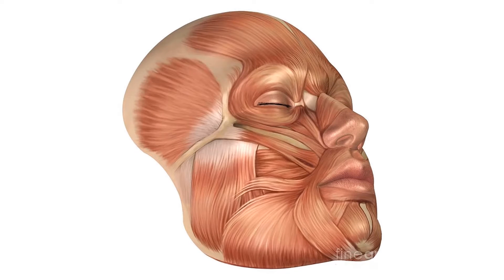As we can see in this slide, the face is full of muscles. Muscles are usually concentrated around the openings of the face, mainly the two orbits and the mouth. All these muscles are supplied by the facial nerves, one on the right and one on the left.